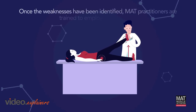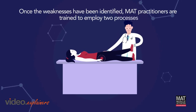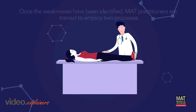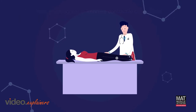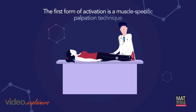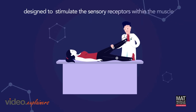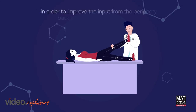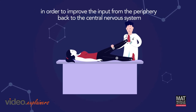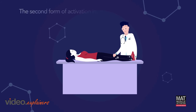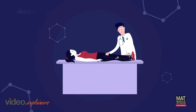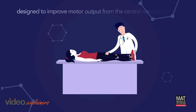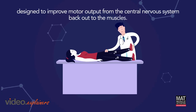Once the weaknesses have been identified, MAT practitioners are trained to employ two processes designed to improve contractile capabilities. The first form of activation is a muscle-specific palpation technique designed to stimulate the sensory receptors within the muscle in order to improve the input from the periphery back to the central nervous system. The second form of activation involves position-specific isometrics designed to improve motor output from the central nervous system back out to the muscles.